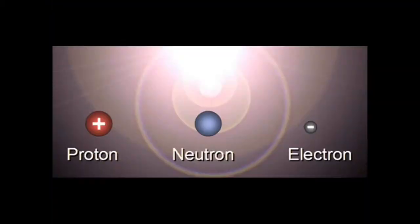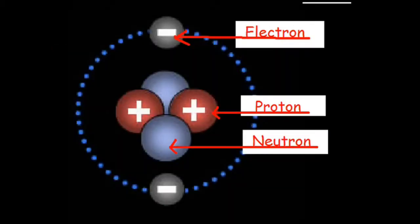Atoms are so small that you cannot see them. Each atom has three particles called protons, neutrons, and electrons. Let's learn about these particles so that we can understand how electricity works.